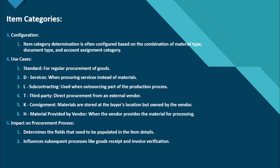T is for third party, which is direct procurement from an external vendor. K is for consignment, for materials stored at the buyer's location but owned by the vendor. H is for materials provided by the vendor for processing. The item category determines the fields that need to be populated in the item details and influences subsequent processes like goods receipt and invoice verification.